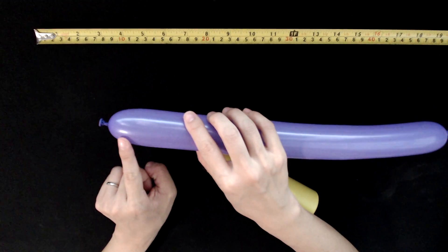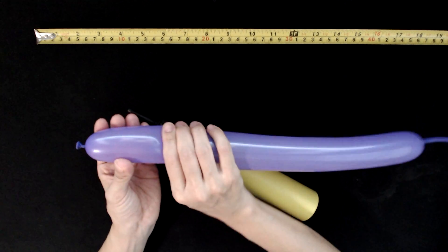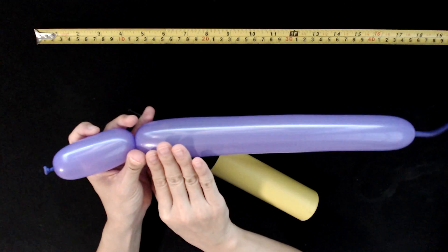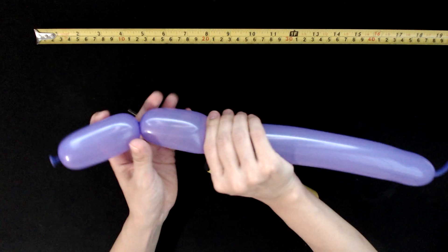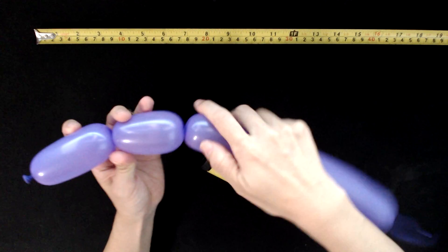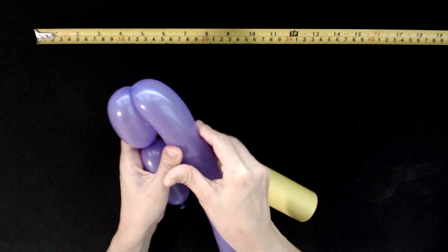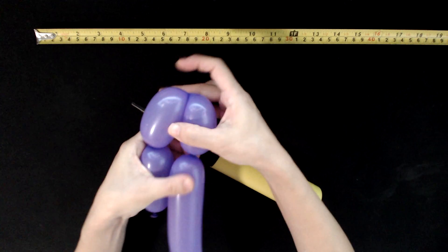And this part is going to be the mouse nose. Now we make the mouse ears. Twist it.